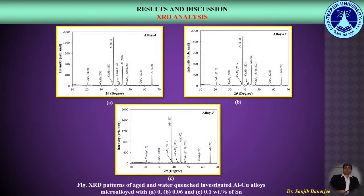In this figure, we can see the XRD patterns of the aged and water-quenched alloys micro-alloyed with 0, 0.06, and 0.1 weight percent of tin. In these figures, we can observe peaks related to the aluminum phase, which is the matrix, along with CuAl₂ or the theta phase. The lattice parameters of both these phases may be detected from this XRD analysis.